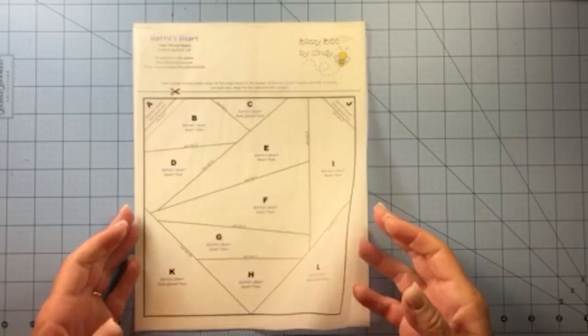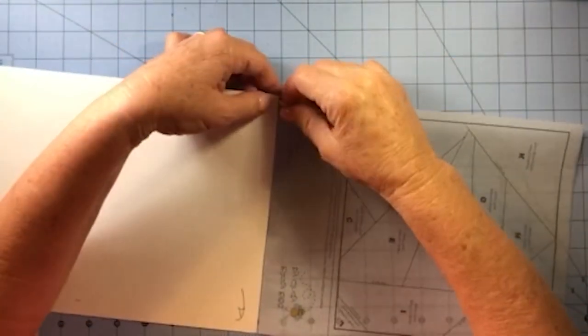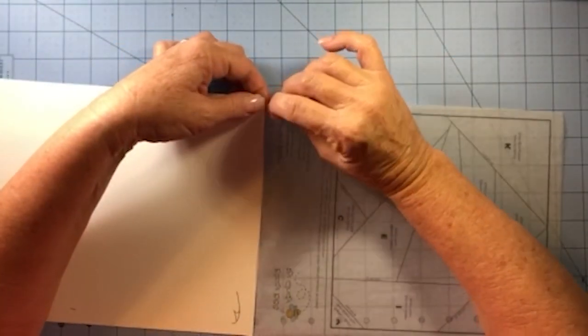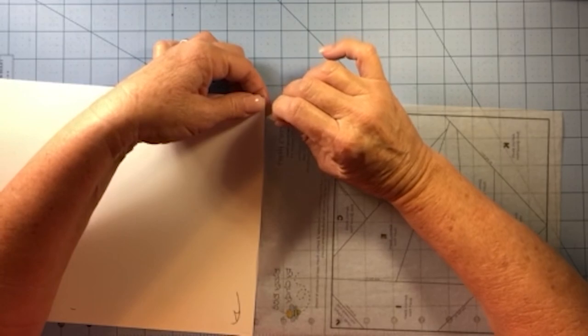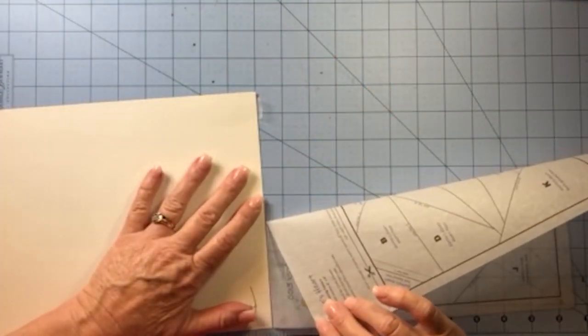All right, to pull the tracing paper off of the cardstock, you just want to turn this over and really gently just kind of pull it away. You can usually do it without tearing your tracing paper.